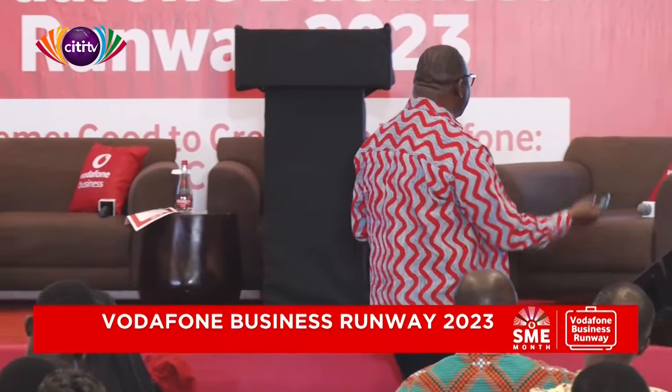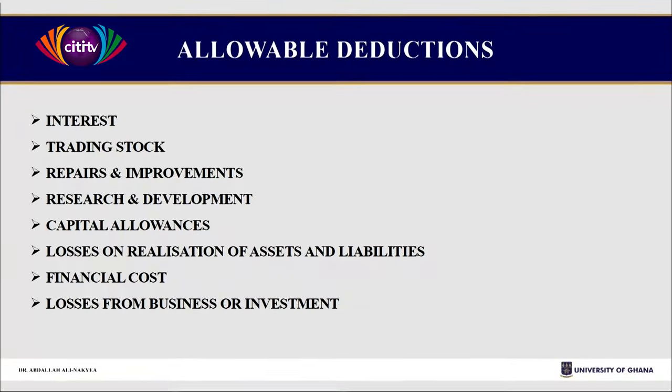So it is good to borrow to expand your business because you have a benefit of a deduction on interest. Repairs and improvements of items used — whether stationary, equipment, or machines — you can deduct. Research and development also. One other key issue is capital allowance. The Revenue Authority agrees that you are investing so much to earn the income they are going to tax. So any cost of investment in assets, you are allowed a capital allowance to recover the cost. For example, if you bought a car for your business, they allow you 30% of the value every year.